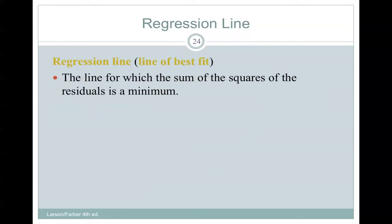A regression line, or line of best fit, is the line for which the sum of squares of the residual is a minimum.